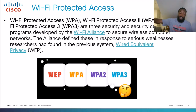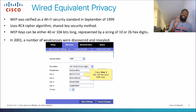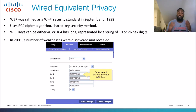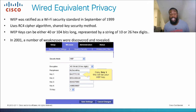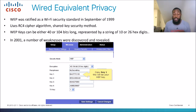Before we talk about the three WPAs, let's talk about WEP — wired equivalent privacy. It was ratified as a Wi-Fi security standard in September of 1999. It uses the RC4 cipher algorithm. There are different types of algorithms: AES, TKIP, and RC4. You just need to know the different types — you don't need to know the math behind it, because encryption is basically mathematical computations used to chop up your text and make it unreadable.